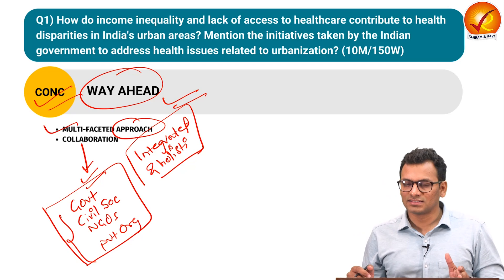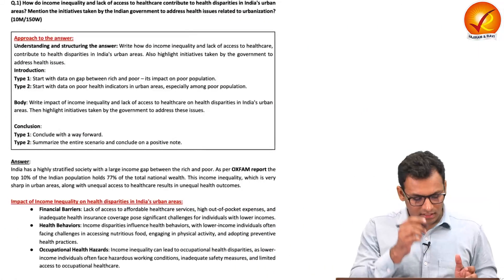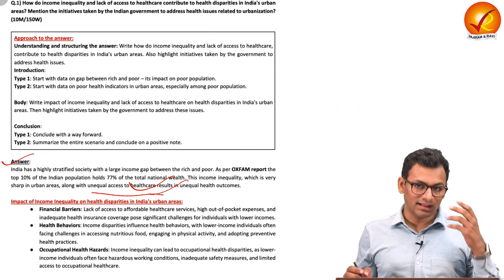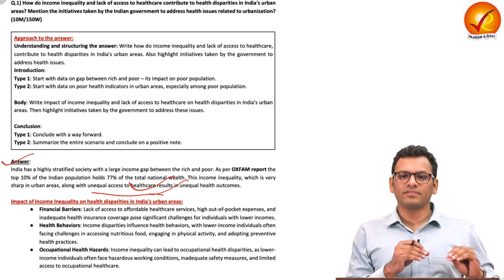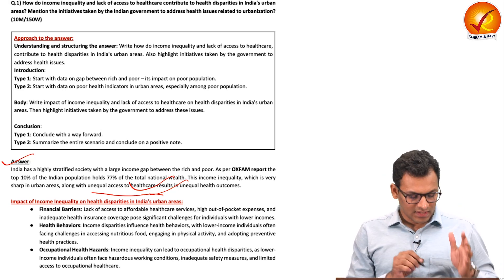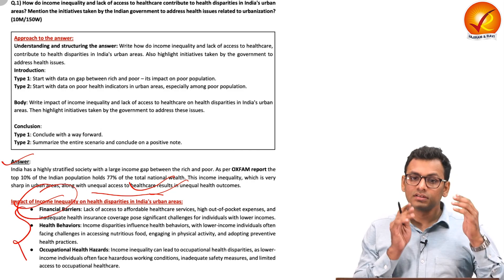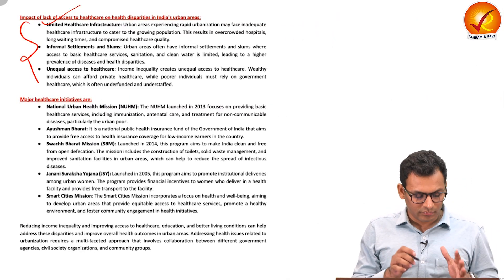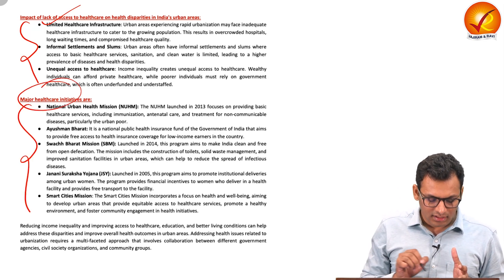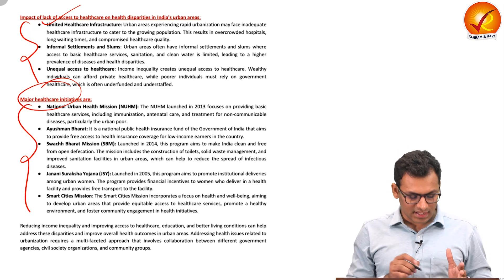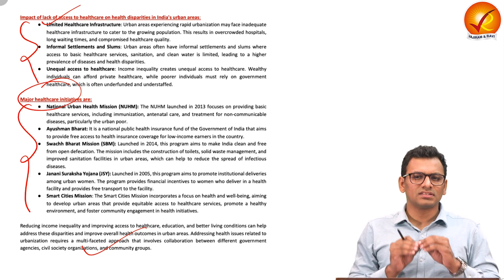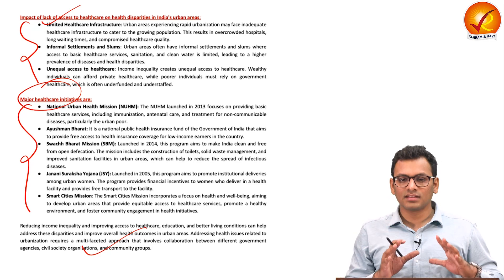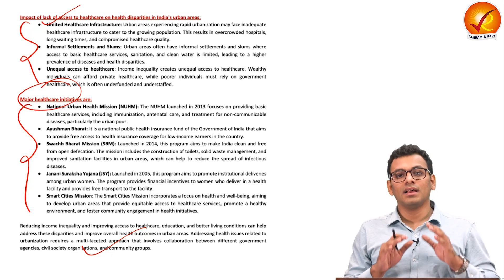The model answer for question one follows this structure: introduction covering the inequality context and Oxfam report; body heading one on income inequality with supporting keywords and proof points; heading two on lack of access with substantiation; heading three listing government healthcare initiatives; and conclusion with measures to ensure equitable healthcare access in urban areas.